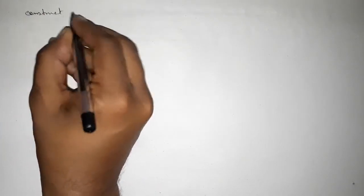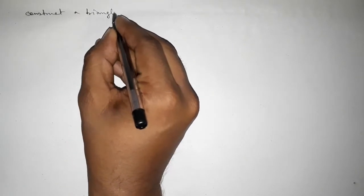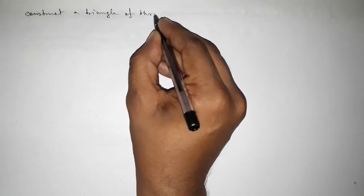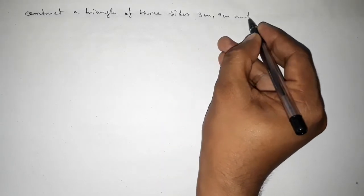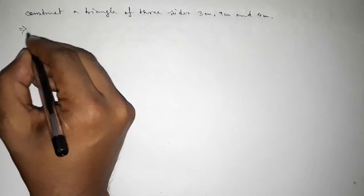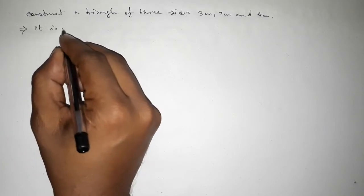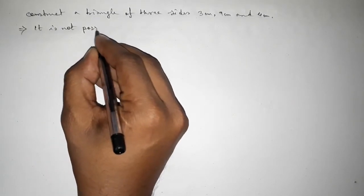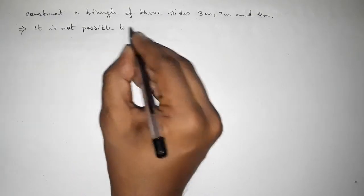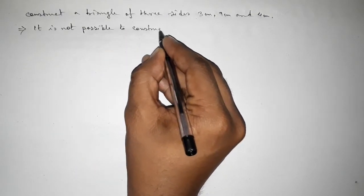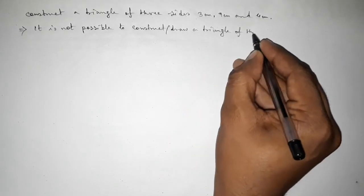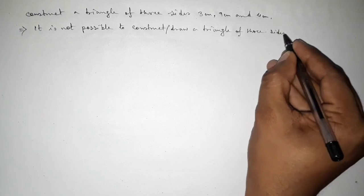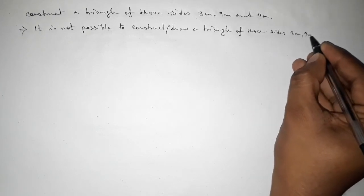Hi everyone, welcome to SSR Classes. Today we are discussing the construction of a triangle with three sides: three centimeter, nine centimeter, and four centimeter. First of all, it is impossible to construct or draw a triangle with these three sides.